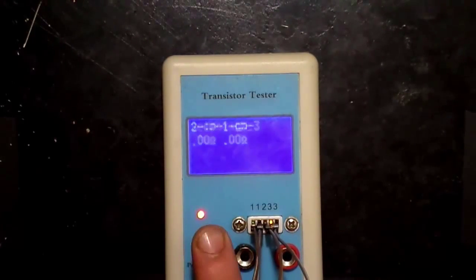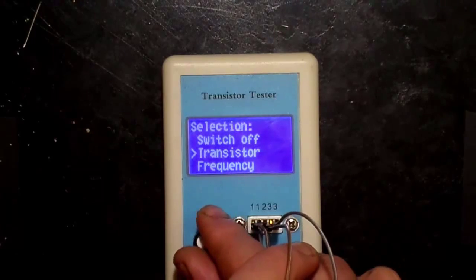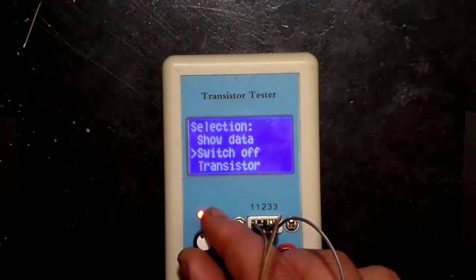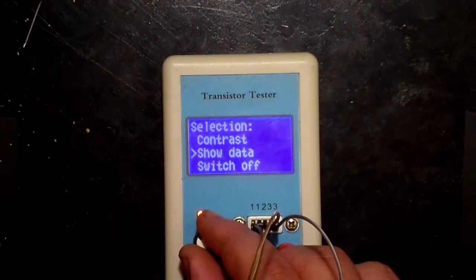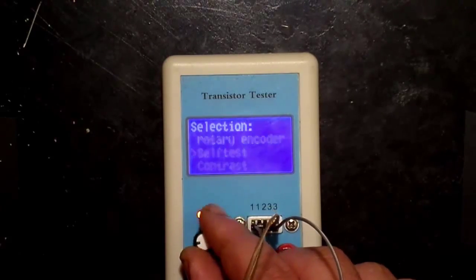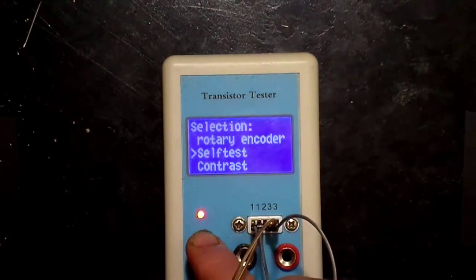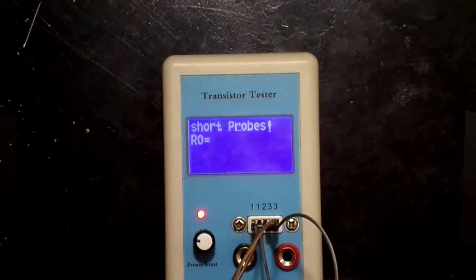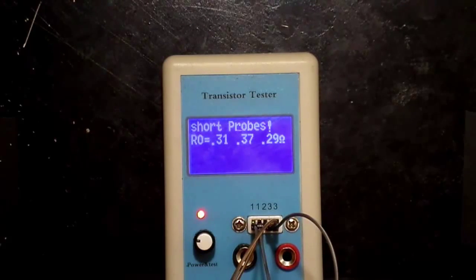Now push and hold for 2 seconds until the menu display. Rotate the knob until you have selected the self test, and then push down on the rotary encoder. The self test has now started.